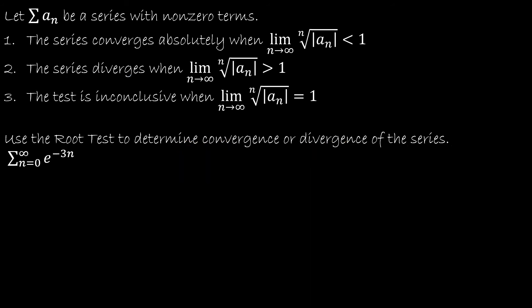Let's take a look now at another example, and again we're going to start off the same way. We're going to look at the limit as n approaches infinity of the nth root of a_n, or the absolute value of a_n. So this is e to the negative 3n, which is really the same as 1 over e to the 3n.